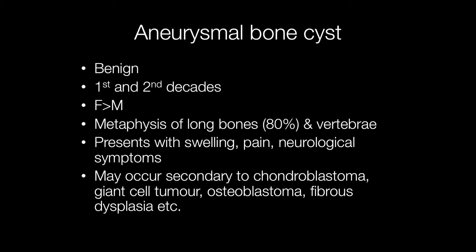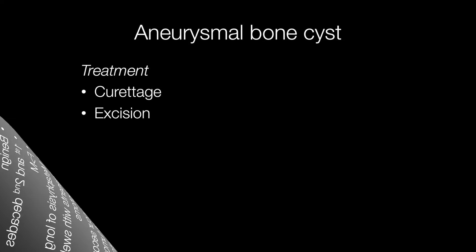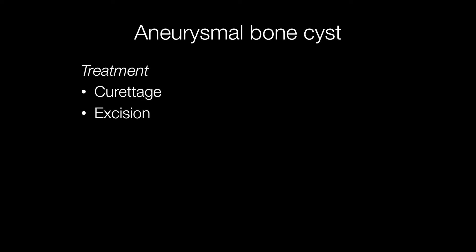Aneurysmal bone cysts may occur de novo or secondary to other tumours such as chondroblastoma, giant cell tumour, osteoblastoma, and fibrous dysplasia. The two main forms of treatment are curettage and excision, but approximately 20% of aneurysmal bone cysts recur.